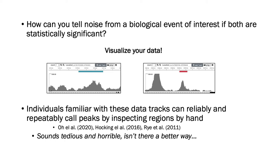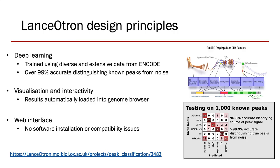Obviously, this is not feasible genome-wide. But we wanted to create a peak caller to address the false positive problem, and this idea was really critical to our design. So when we were planning our new peak caller, we decided to use peaks labeled by humans to teach a deep learning algorithm what a peak looks like. We got these data from ENCODE, which has a varied and extensive collection of experiments to work with.